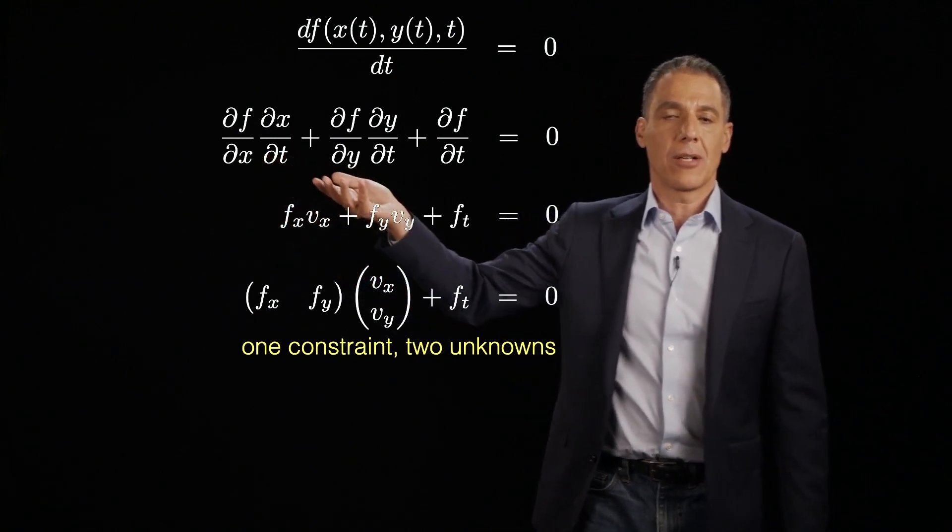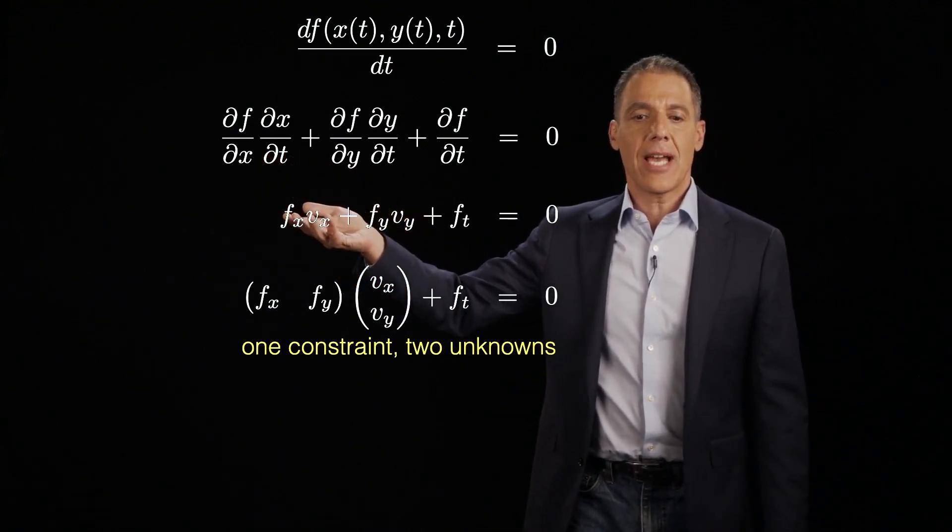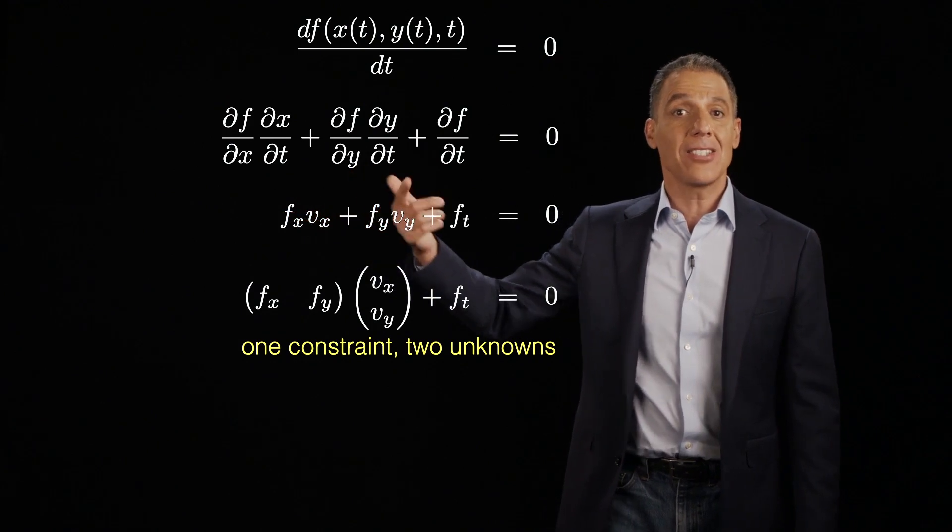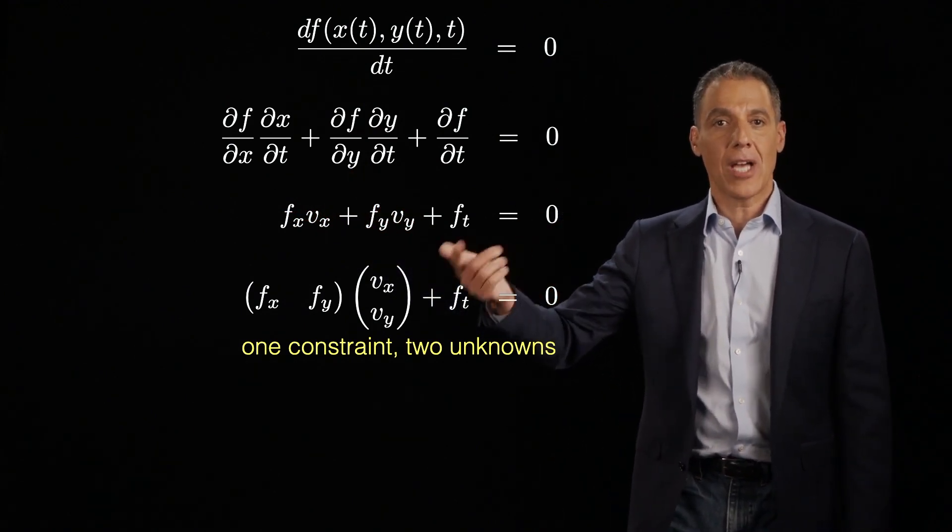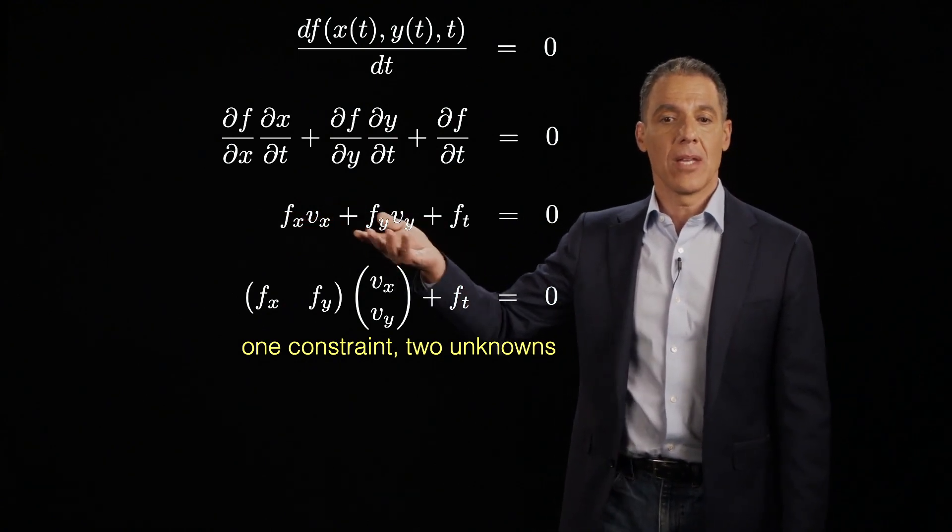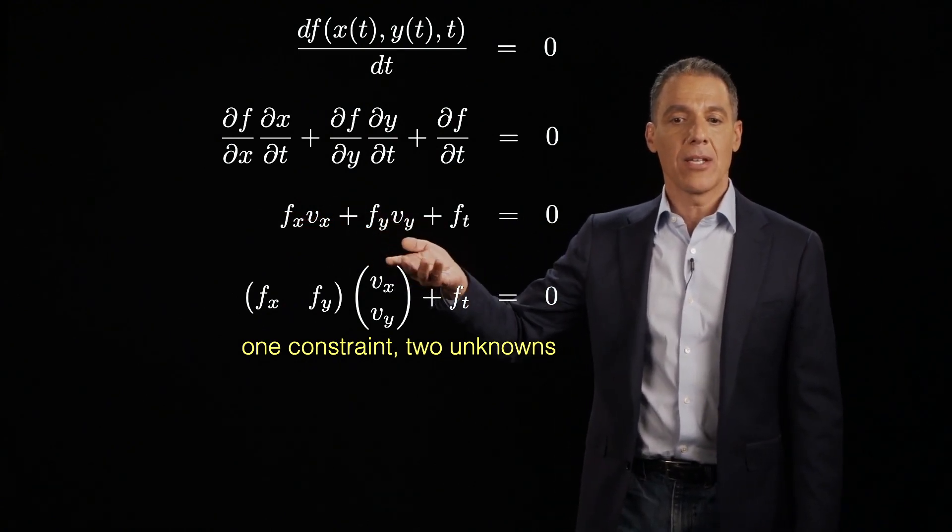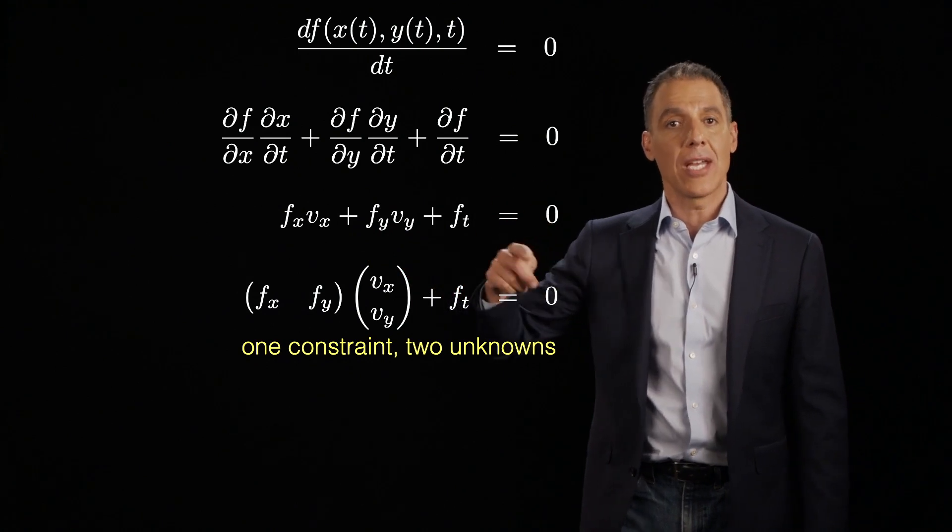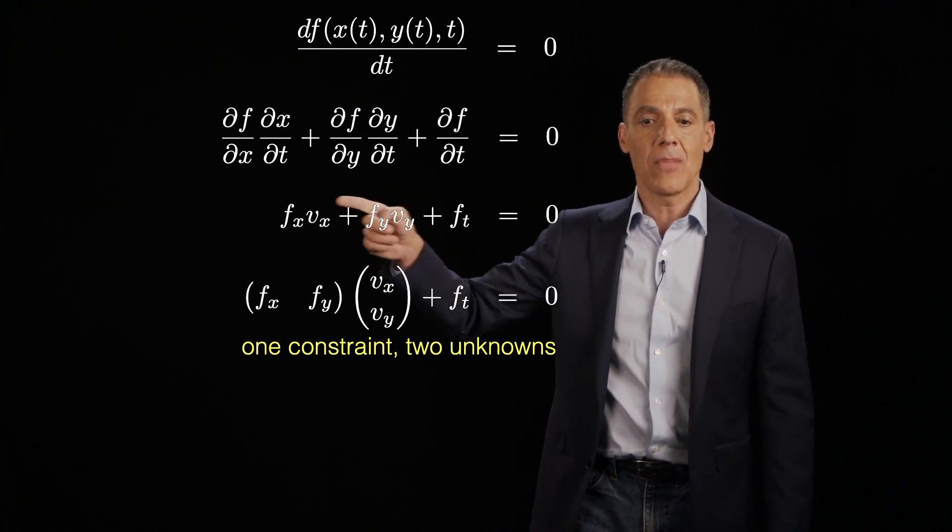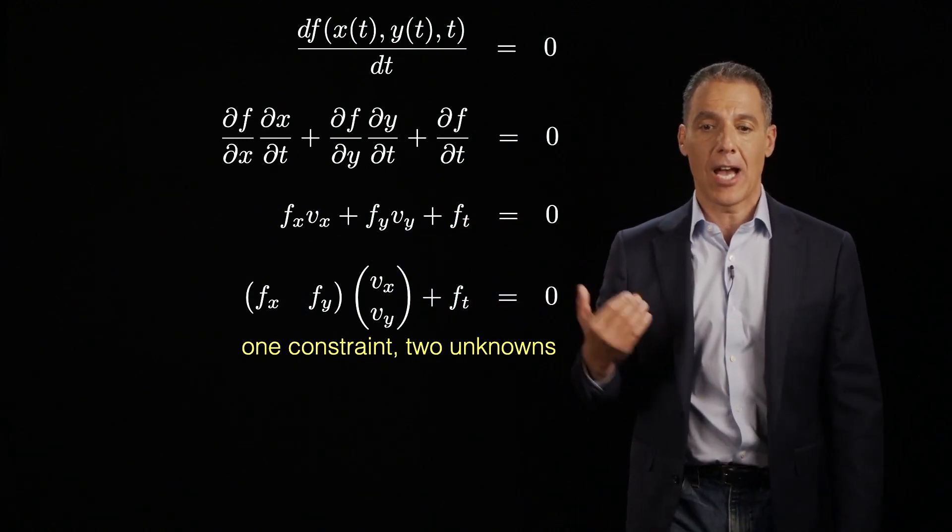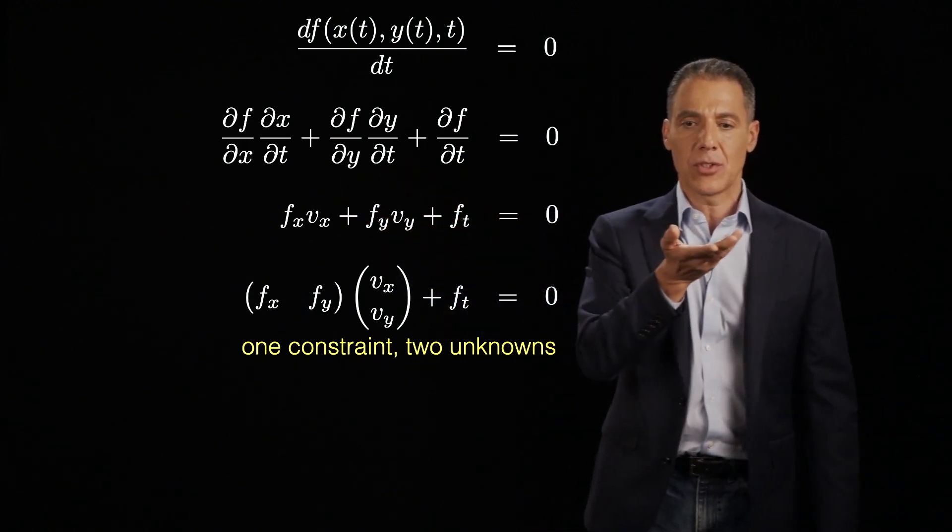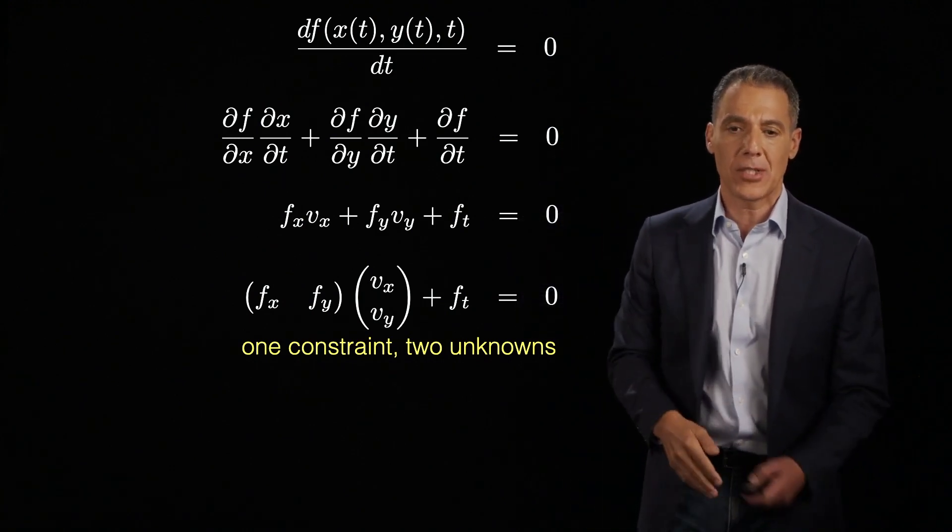So let's rewrite these to get rid of this clumsy notation. df/dx is f_x. dx/dt is the rate of change in spatial position as a function of time. That's my velocity in the x direction. And then, of course, I have df/dy, I've got v_y, the velocity in the y direction. And then I've got my temporal derivative. How much am I changing as a function of time? And, of course, that is equal to zero because of the brightness constancy assumption.